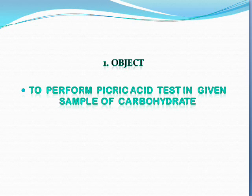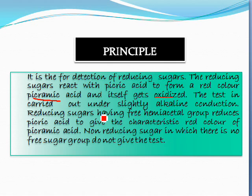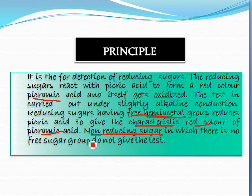This is a test for the detection of reducing sugars. The reducing sugars react with picric acid to form a red color complex. Picric acid is reduced because reducing sugars have a free hemiacetal group, which reduces picric acid to give the characteristic red color. Non-reducing sugars, which have no free aldehyde groups, do not give this test.